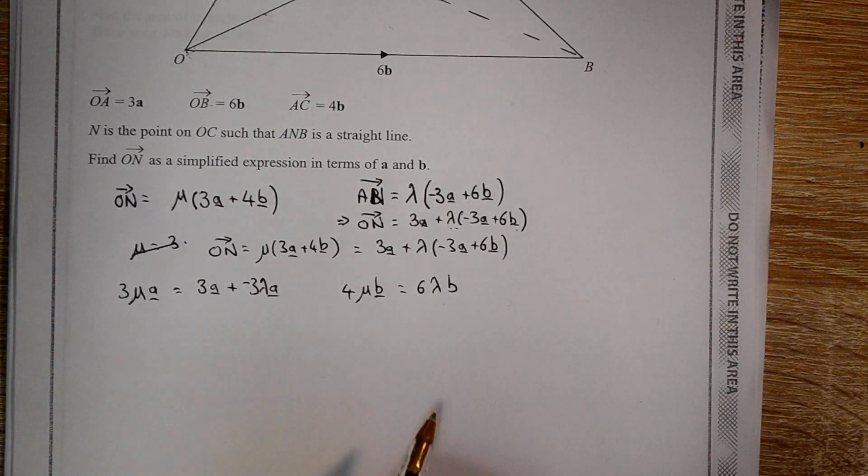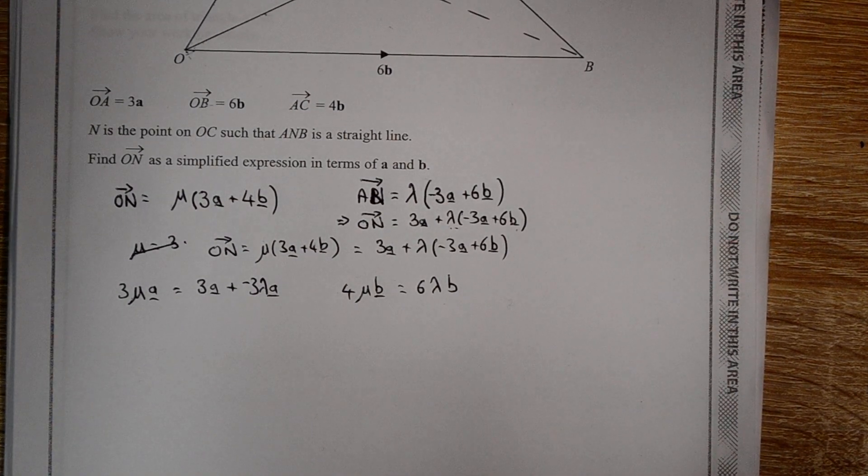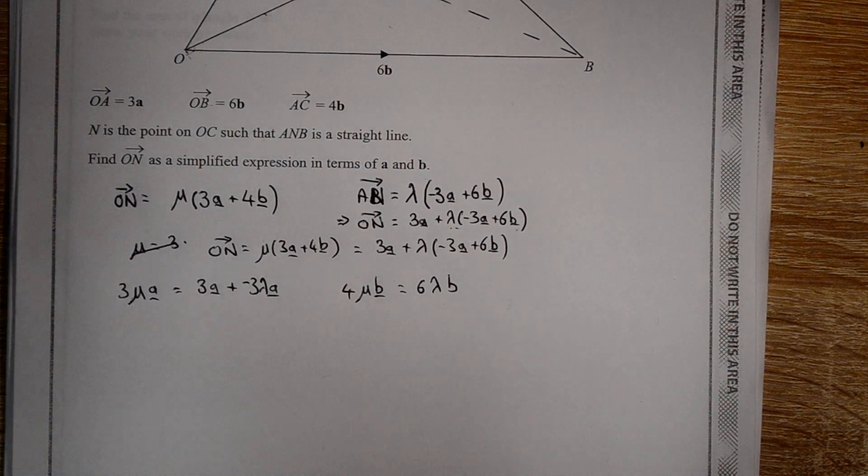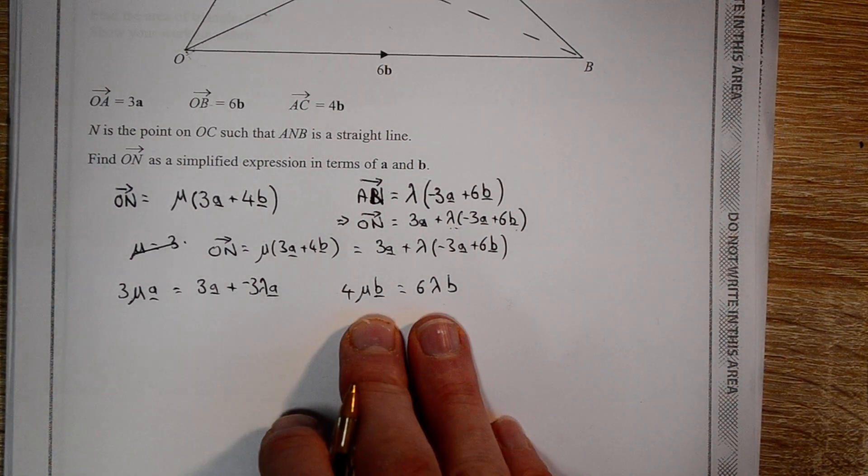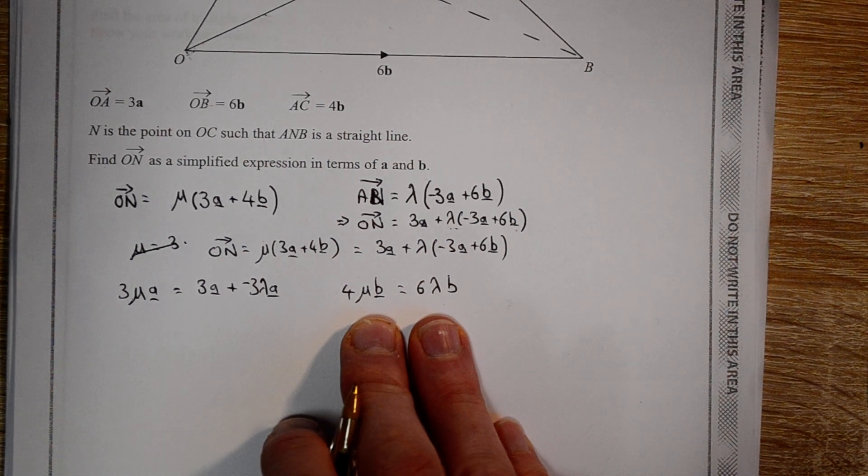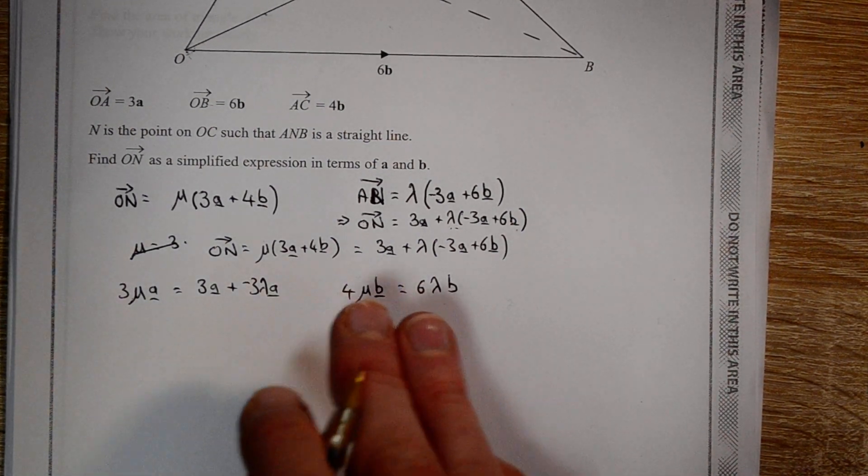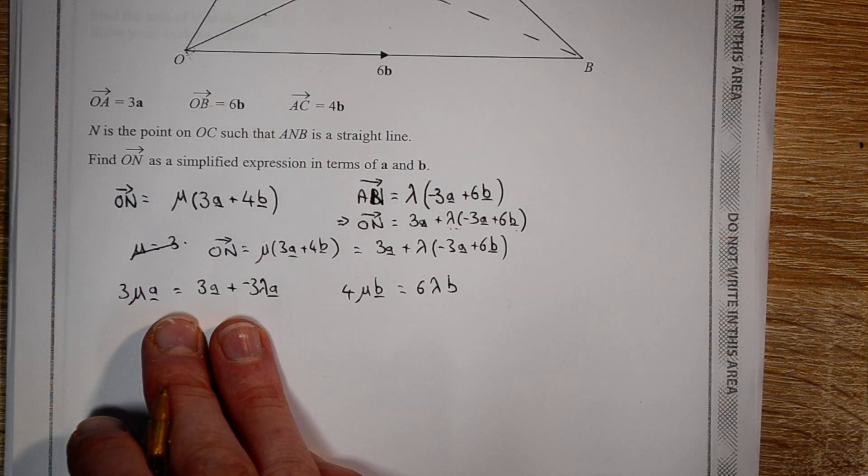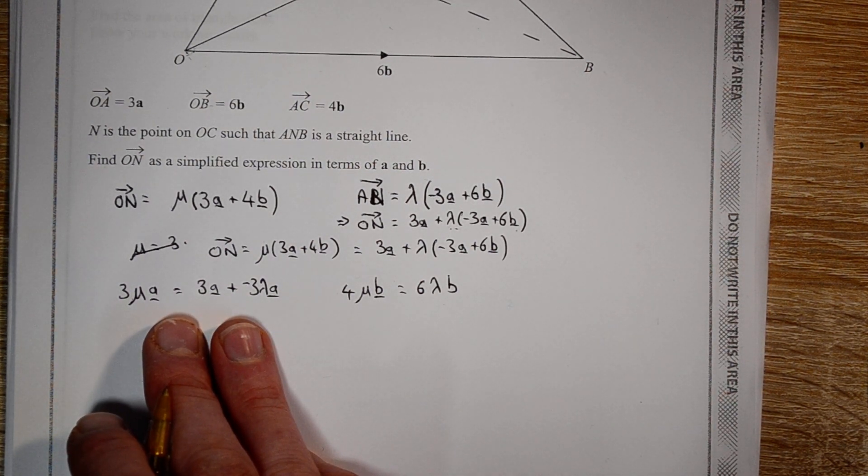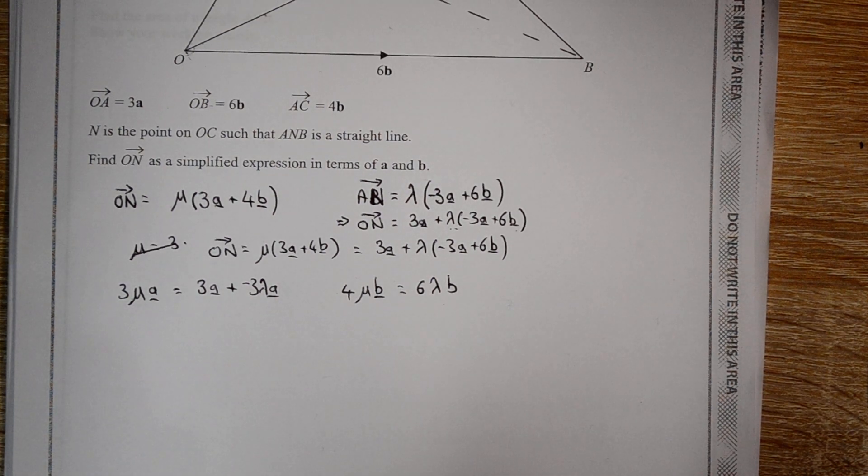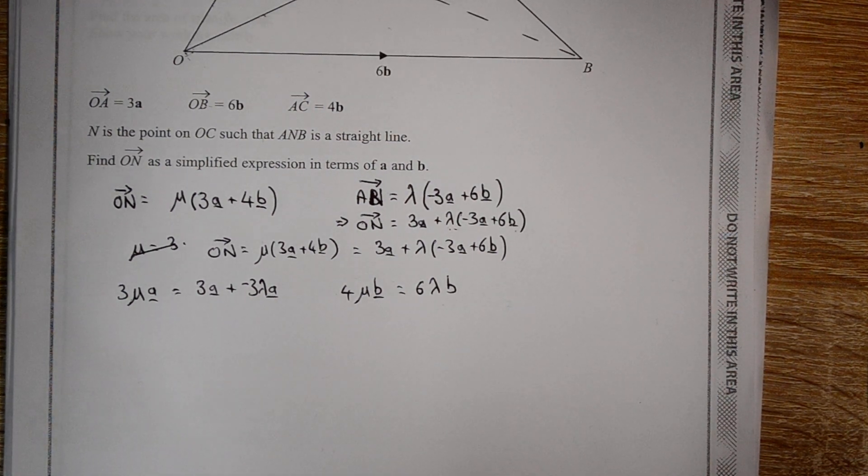So what we're going to do is I'm going to take this equation first, and I'm going to express lambda in terms of mu. Then what I'll do is I'll substitute it into this vector equation, and that will give us just one unknown which we can solve and then find the location of N.